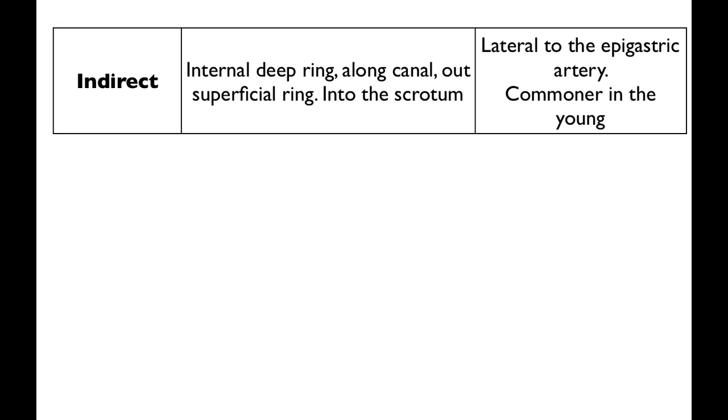These are defined anatomically as being lateral to the epigastric artery and vein, and are commoner in the young because they're more congenital. Basically, the gubernaculum is where the scrotum will descend through these rings from being an abdominal organ into the testes.